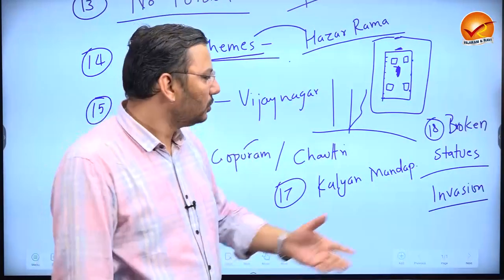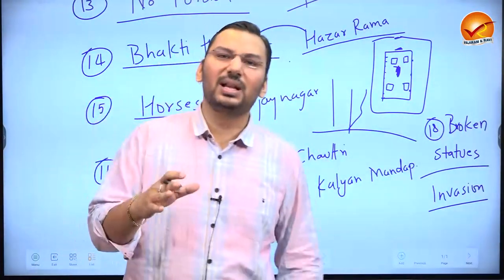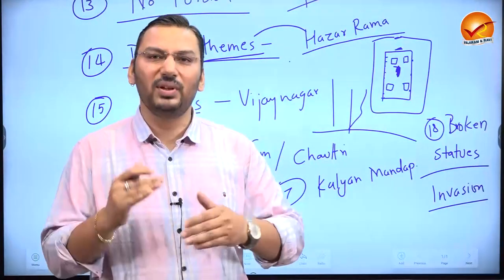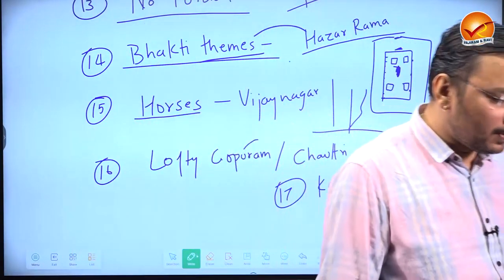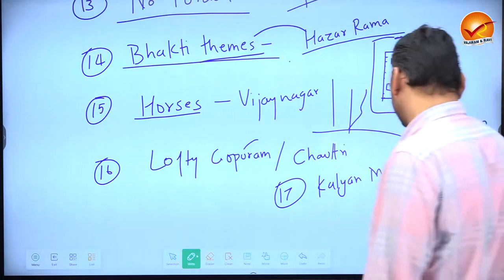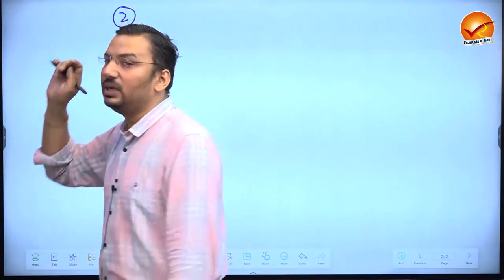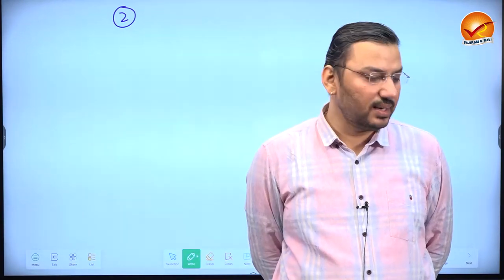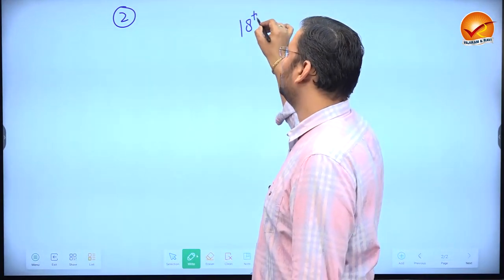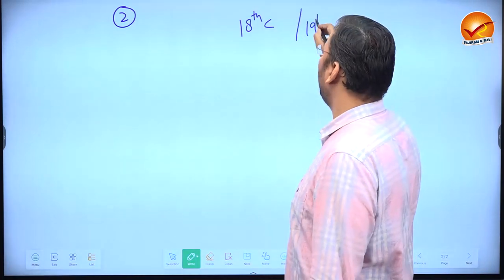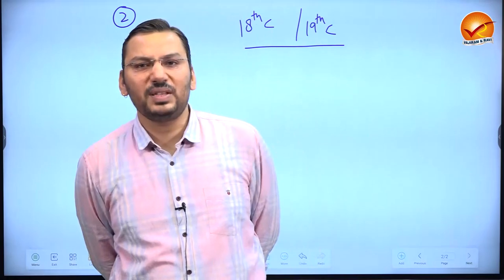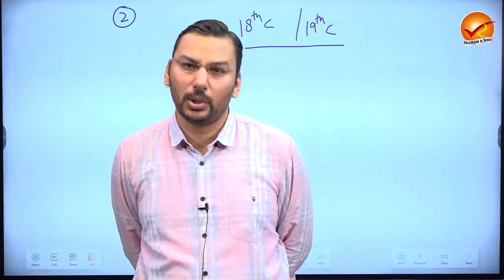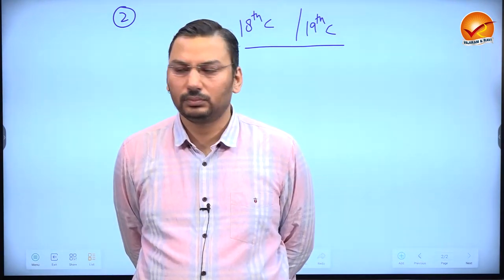That concludes question number one. Let's move to question number two: Why did the armies of the East India Company, mostly comprising Indian soldiers, win consistently against the more numerous and better-equipped armies of Indian rulers? The question asks why, in 18th and early 19th century warfare, Indian armies lost to British/European armies that were — in many ways — equally equipped.